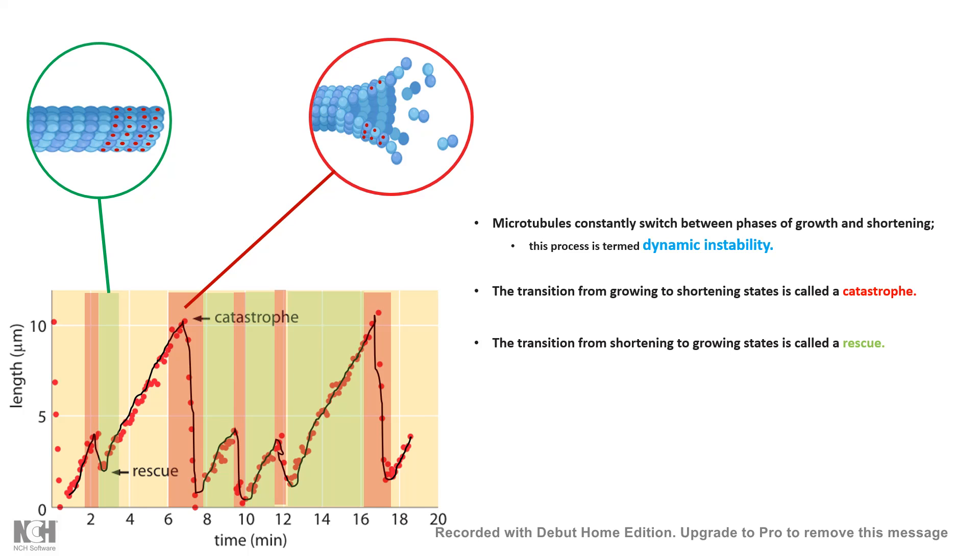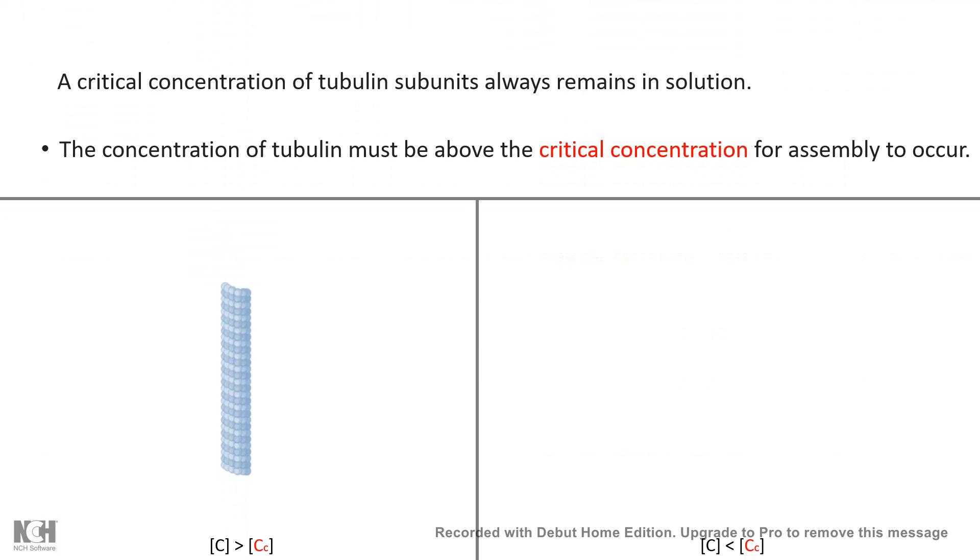All these things hint us that there could be a critical concentration of these tubulin dimers based on which microtubule polymerization kinetics could vary. So there exists a critical concentration for microtubule assembly. If our given concentration, which is the concentration of tubulin present in the solution, is more than the critical concentration, then it would undergo polymerization and increase in the length of the microtubule. Whereas if the concentration at a given time point is less than the critical concentration, then microtubule would depolymerize and get destabilized and the length would be shortened.